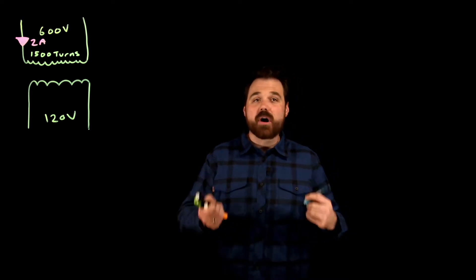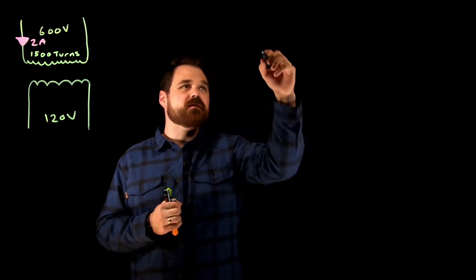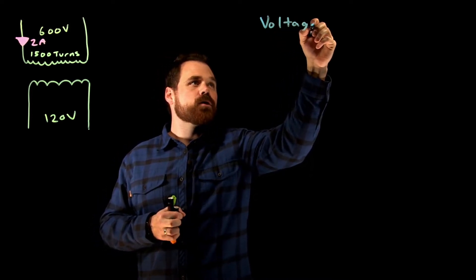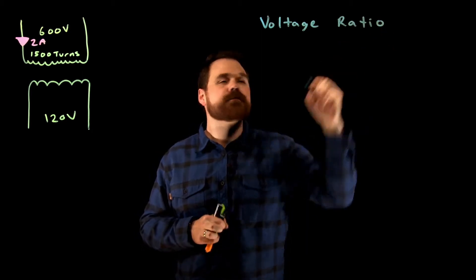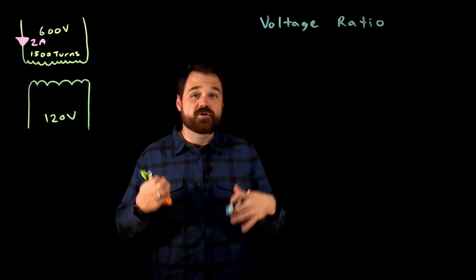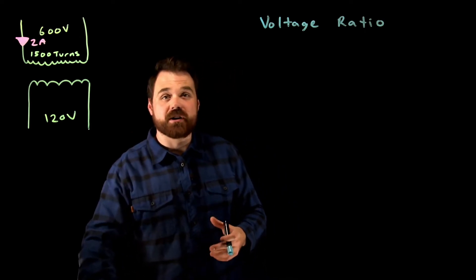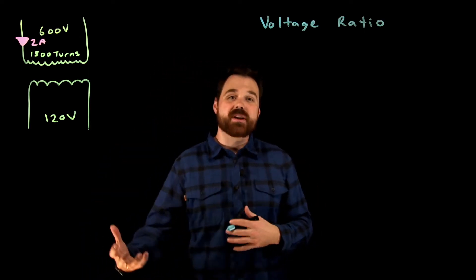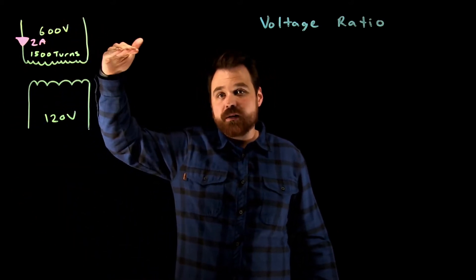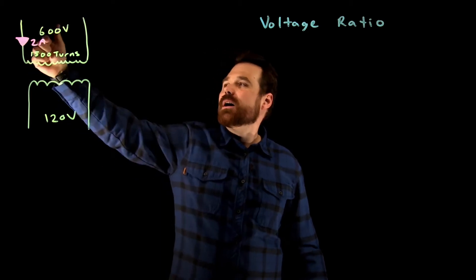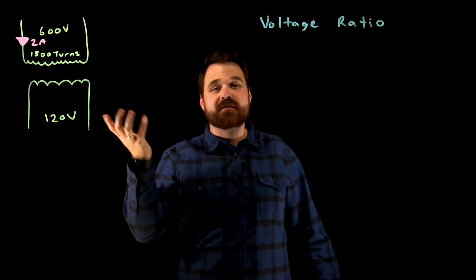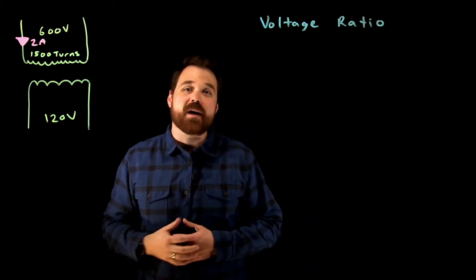What I want to start off talking about with a transformer is called the voltage ratio. So the most common ratio in a transformer, the number one thing that we're looking to do is we're looking to change one voltage to another voltage. So I've got a transformer here. It's 600 volts on the primary up top coming in with a rated current of two amps on the primary and it's got 1500 turns or 1500 wraps of wire around that core.